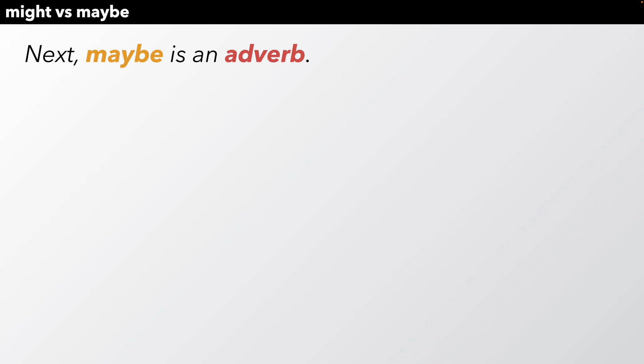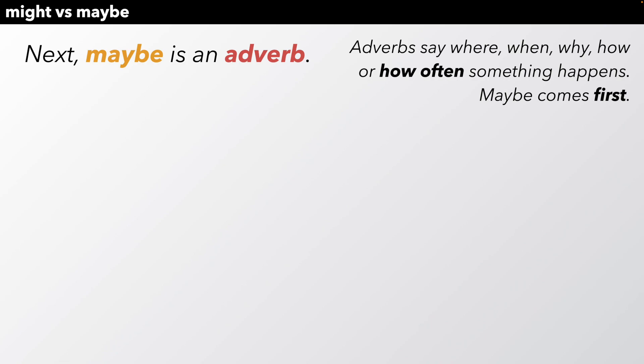Next, maybe is an adverb. And adverbs say where, when, why, how, or how often something happens. Maybe comes first in a sentence.